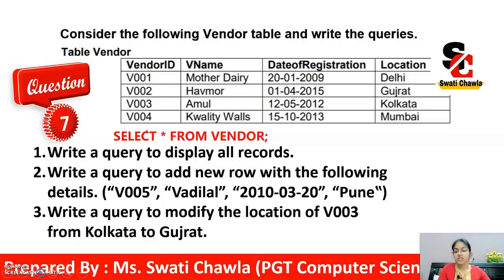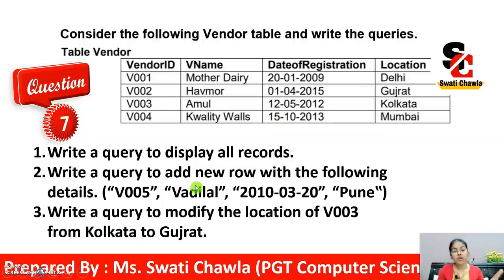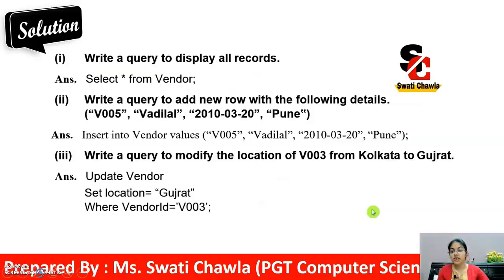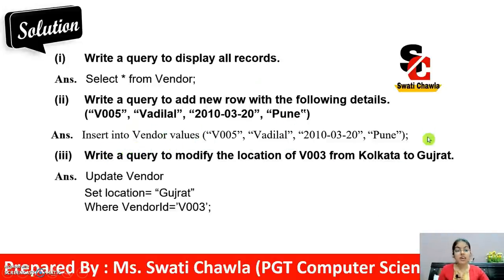For the second query: write a query to add a new row with the following details — V005, Vadhe Lal, a given date, and Pune. So simply write: INSERT INTO vendor VALUES ('V005', 'Vadhe Lal', date, 'Pune'). Note that some values need to be written in single quotes as OpenOffice Base may not support double quotes.